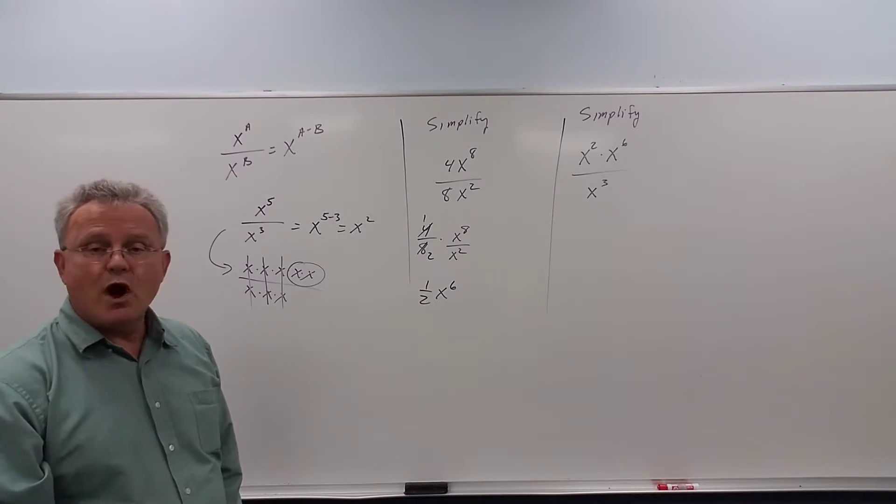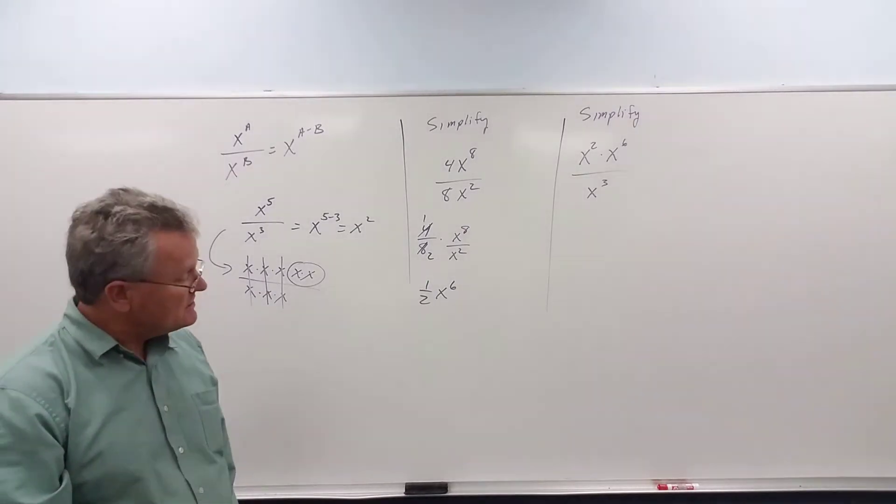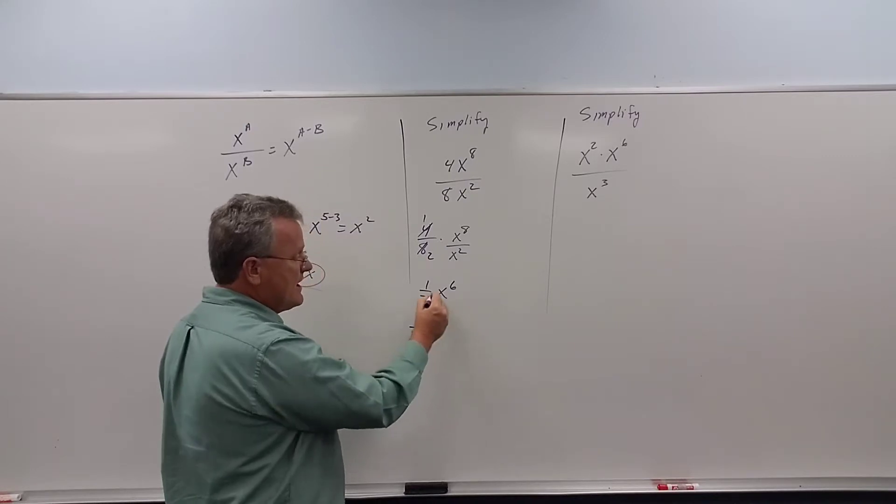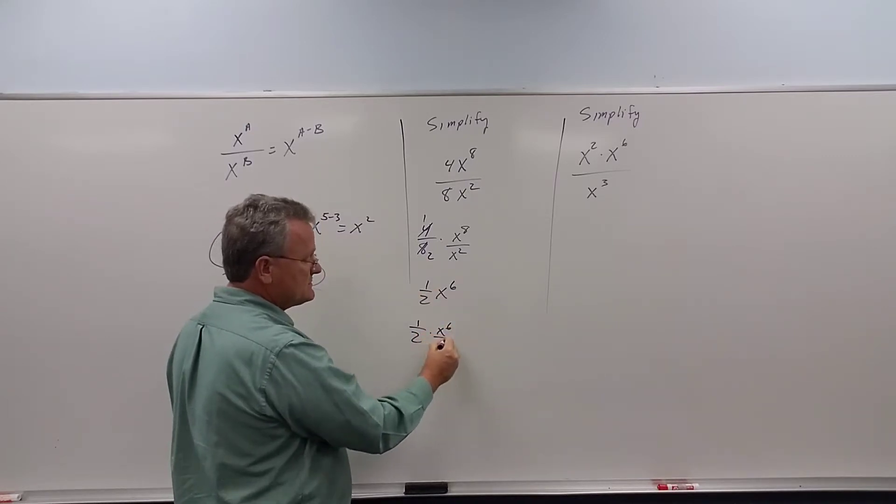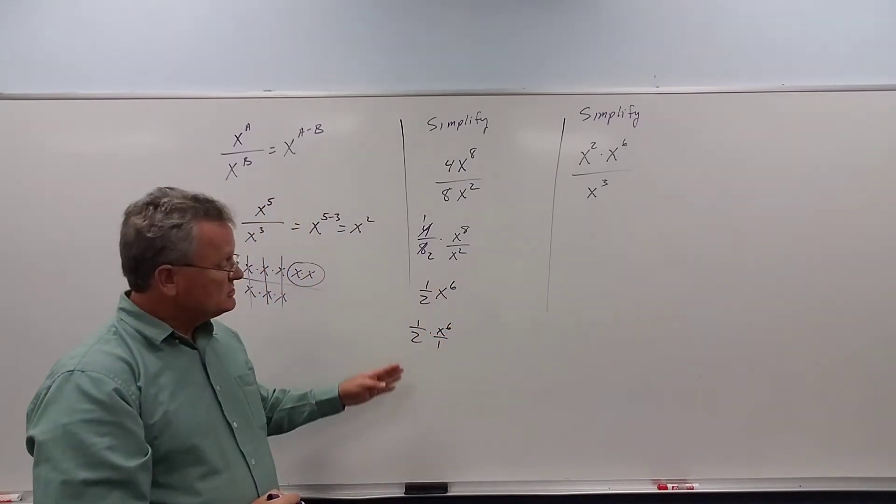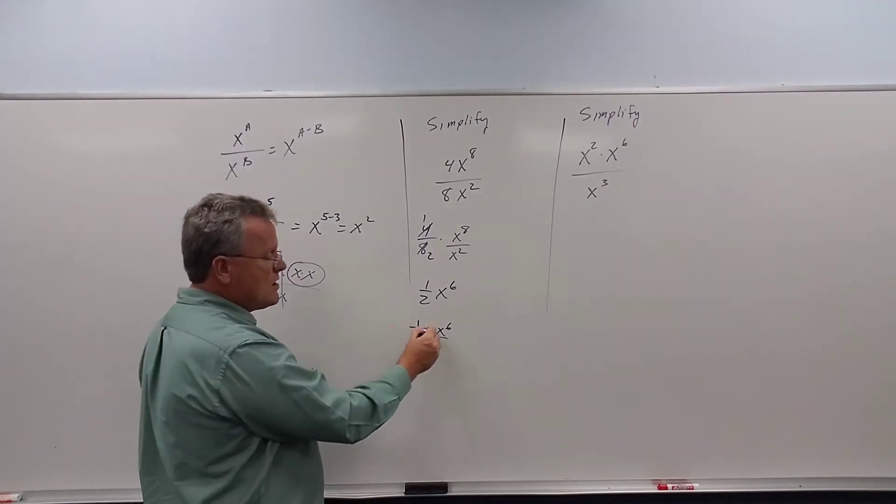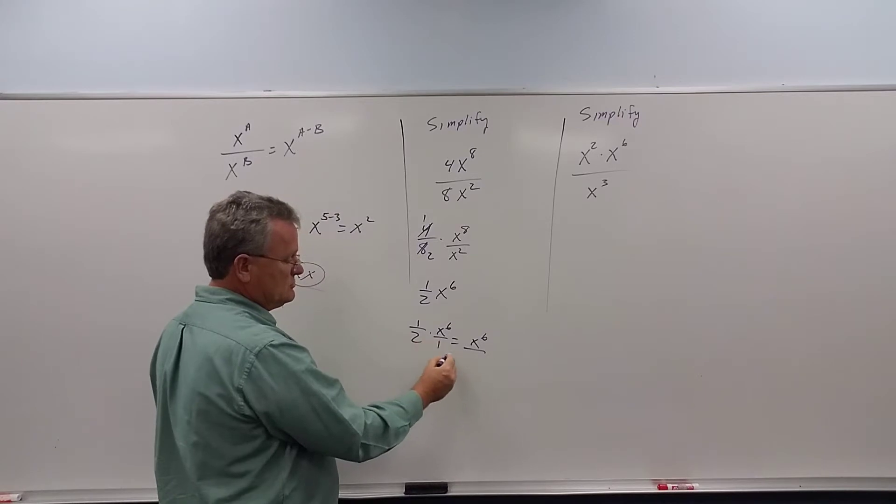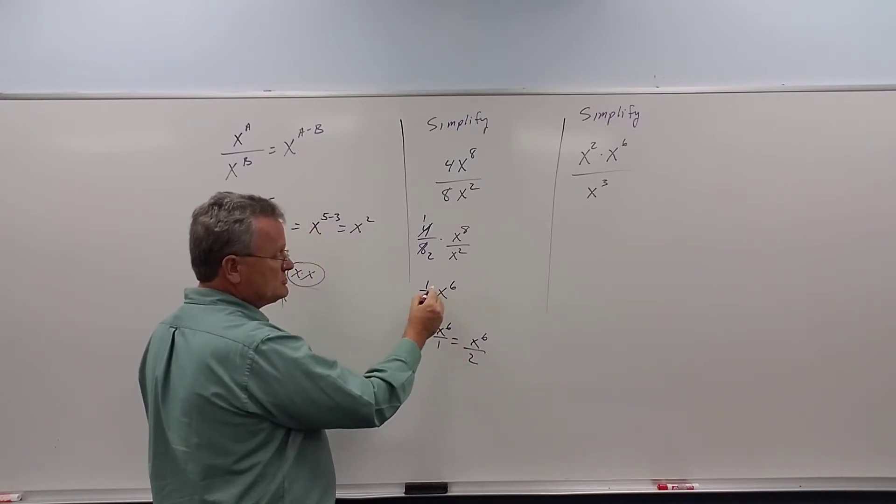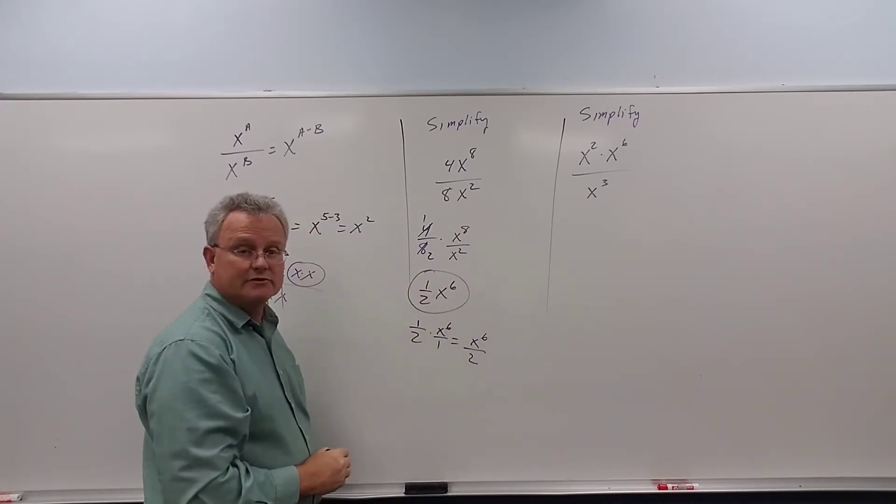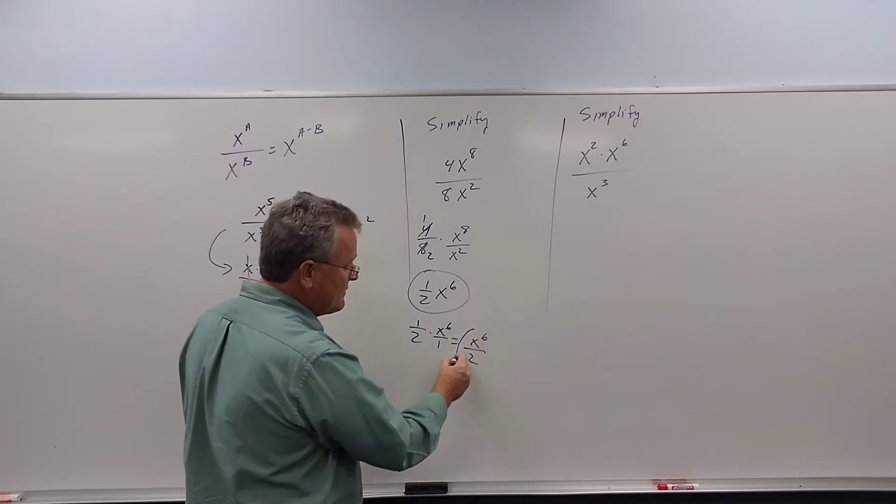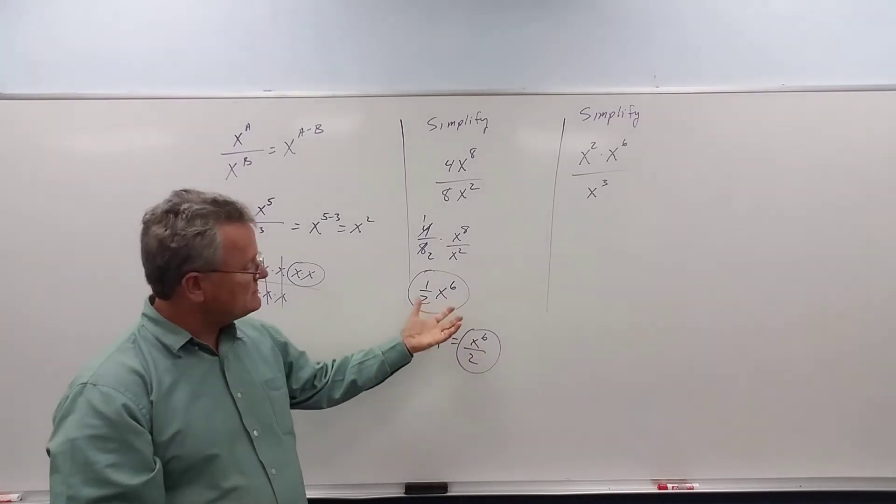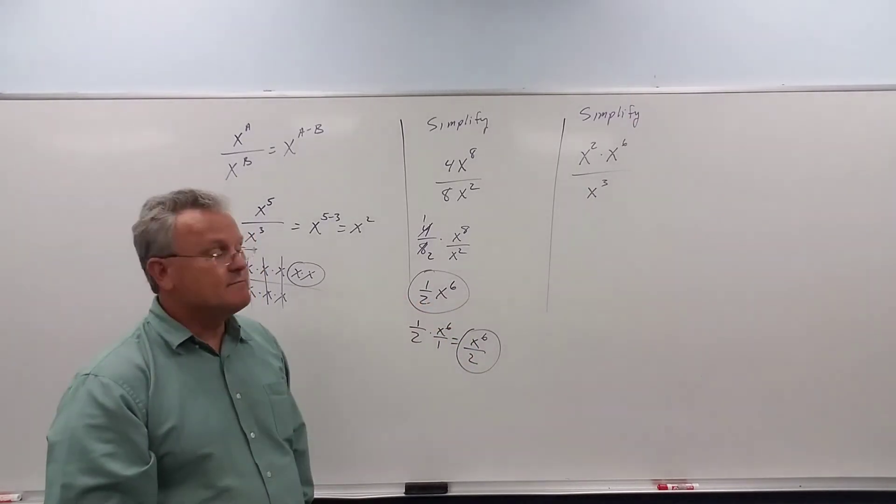So the answer is 1 half x to the 6. Now if we multiply this, understand 1 half x to the 6 is x to the 6 over 1. So if we multiply this, 1 times x to the 6 is x to the 6, 2 times 1 is 2. So this answer is equivalent to this answer here. These are both the same answer. They look a little different, but they're the same thing.